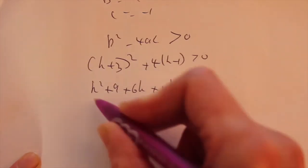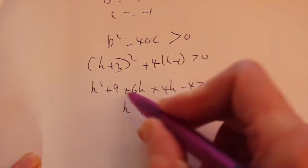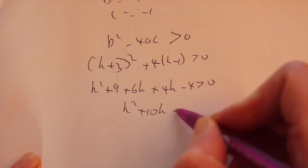Quadratic inequality. All terms on one side and tidy them up. k squared plus 10k. 9 take away 4 is 5.